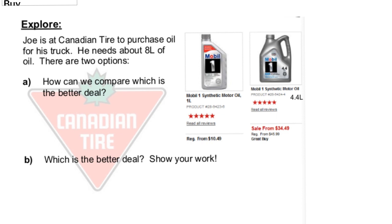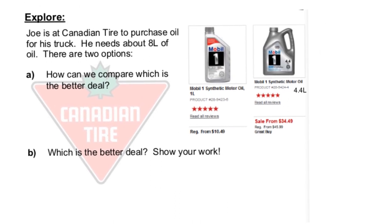Joe is at Canadian Tire and he wishes to purchase about eight liters of oil. Now, we have these two options. One that's for $10.49 and another one that is for $34.49. But you notice that both of them require you to get different amounts. One is one liter and one is 4.4 liter.